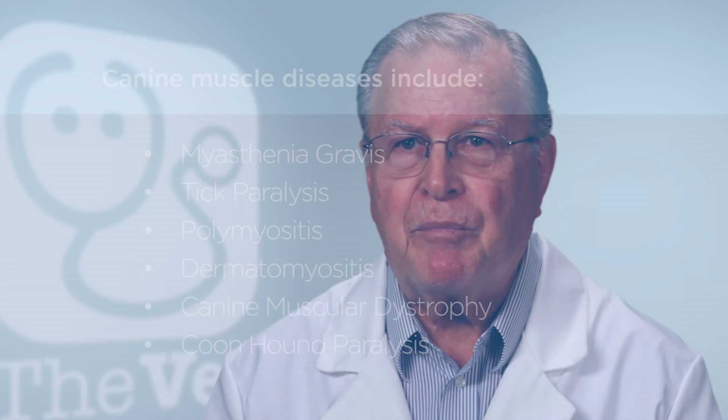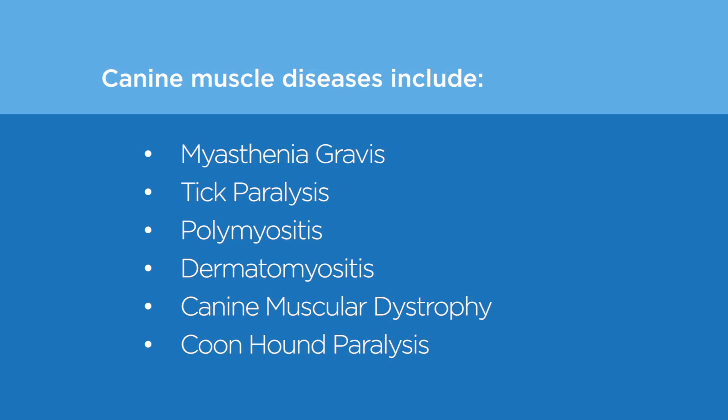A common clinical sign for most of the diseases includes intermittent or generalized muscle weakness and pain. Canine muscle diseases include this list. Canine myasthenia gravis, which is characterized by generalized periodic weakness.